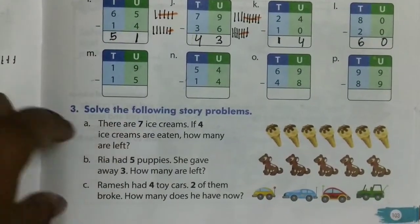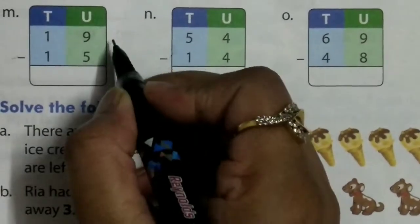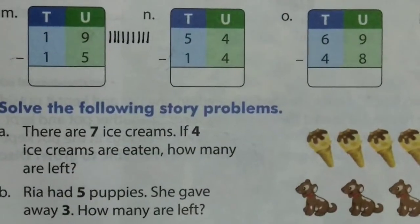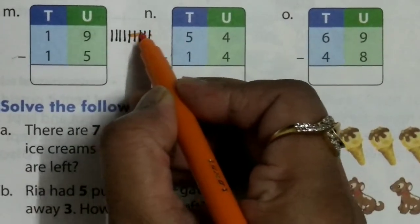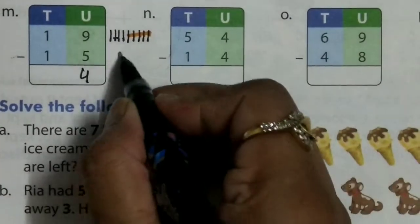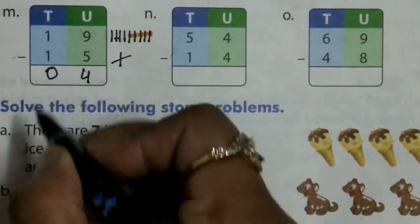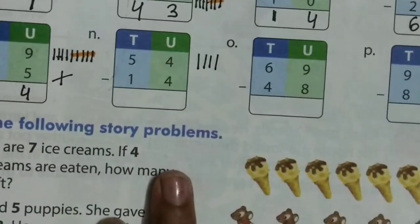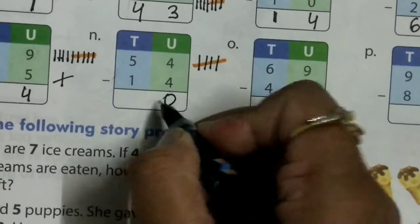9 minus 5: draw 9 lines — 1, 2, 3, 4, 5, 6, 7, 8, 9. Take away 5: 1, 2, 3, 4, 5. Count remaining: 1, 2, 3, 4. And 1 minus 1 — when you have 1 and take away 1, it will be 0. 4 minus 4 — cut 4 lines from 4, it will be 0. From 5, take away 1 — remaining: 1, 2, 3, 4.